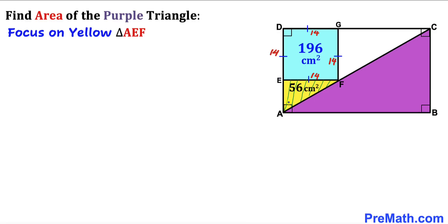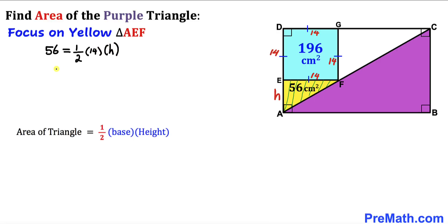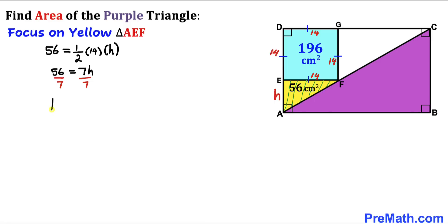Let's focus on yellow triangle AEF and find its height h. Using the area of a triangle formula — area = ½ × base × height — our base EF is 14 and area is 56. So 56 = ½ × 14 × h, which simplifies to 56 = 7h. Dividing both sides by 7, our height h turns out to be 8 cm.